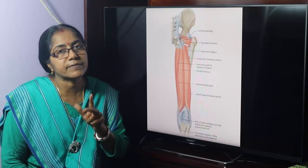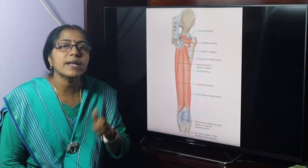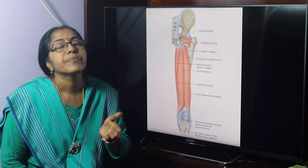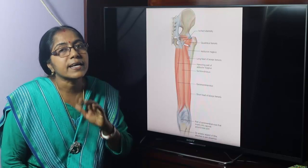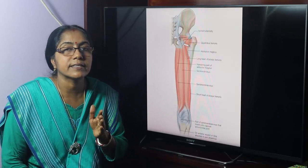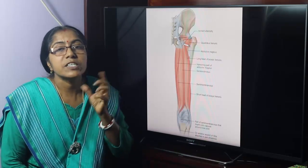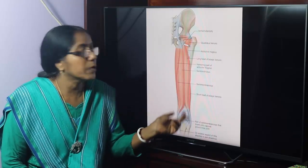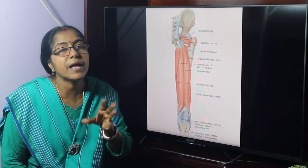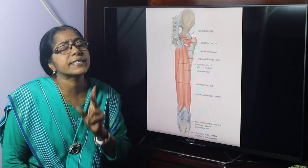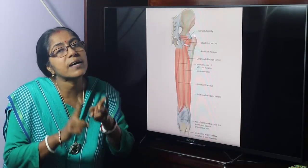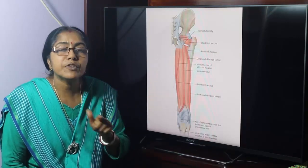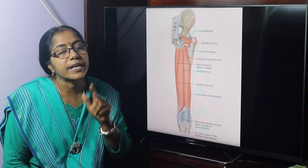The adductor magnus is a composite muscle with an adductor component and a hamstring component. The criteria for hamstring muscles: all arise from the ischial tuberosity, all are supplied by the tibial part of the sciatic nerve, and all are inserted into either tibia or fibula or both. This criteria is fulfilled by semi-membranosus, semi-tendinosus, long head of biceps femoris, and the hamstring part of adductor magnus, which inserts into the adductor tubercle.